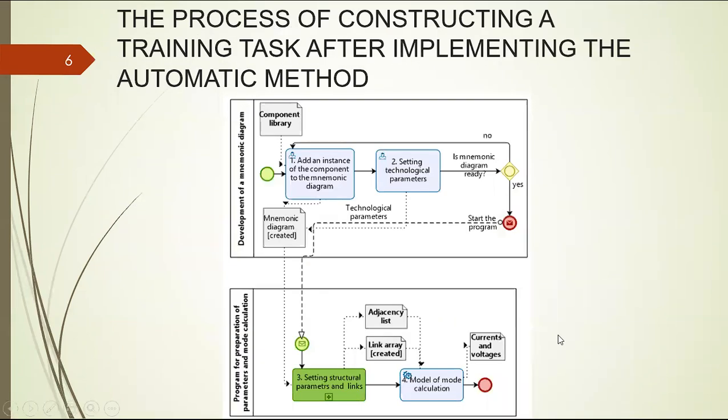Let's take a look at the process of constructing a training test task after implementing the automatic method. The number of stages decreases to four. Settings of structural parameters now happen after start of the program, in the same stage as setting links.